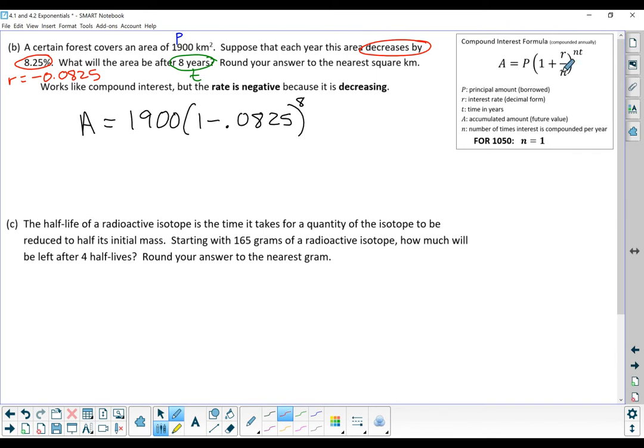Remember, again, in 1050, that N is always a 1. So 1,900 times 1 minus 0.0825 to the power of 8 years. This tells us that after those 8 years, the forest would cover 954 square kilometers. I rounded to the nearest square kilometer.